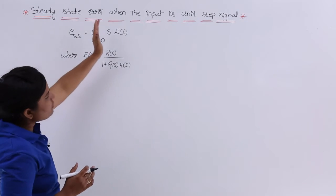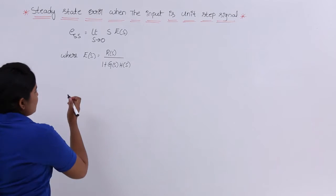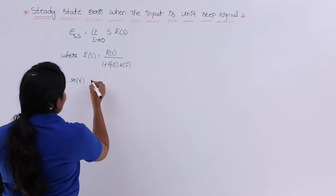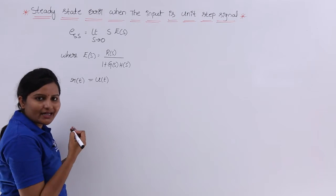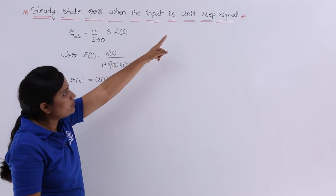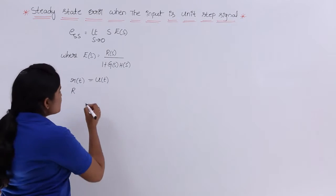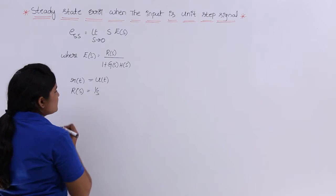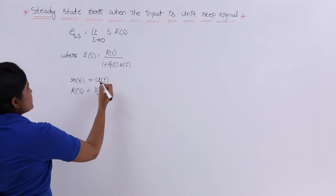We need to find the steady state error when the input is a unit step signal. In a control system, the input is represented as R(t) and its transform as R(s). The input R(t) is equivalent to U(t), the unit step function. Taking the Laplace transform of both sides, R(s) = 1/s, since the Laplace transform of U(t) is 1/s. Now we substitute this value into our equation.